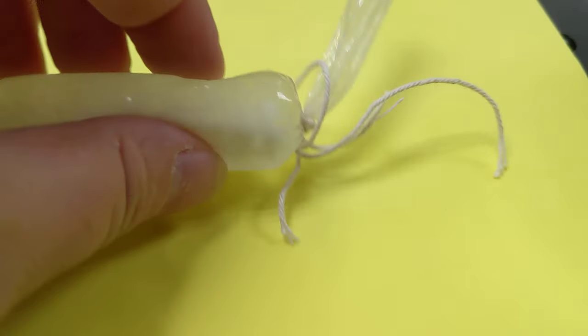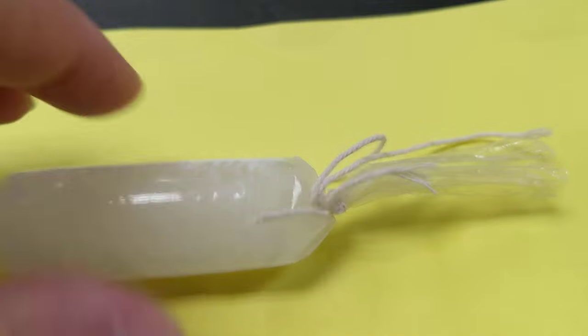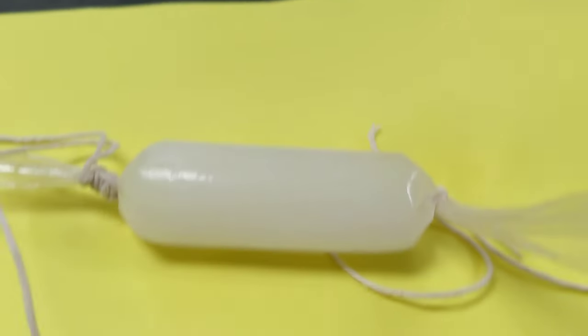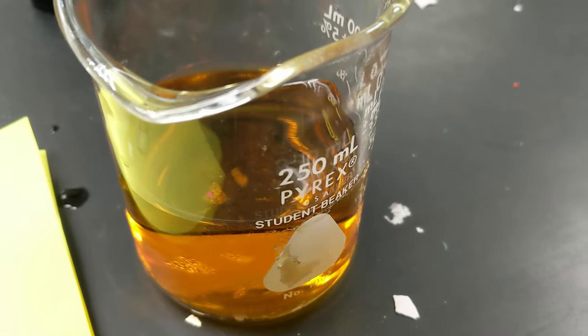This is actually a special kind of tube called a dialysis tube. It's special because it's like a membrane—it's permeable. So you have the starch in the tube, and then we have a beaker full of iodine.